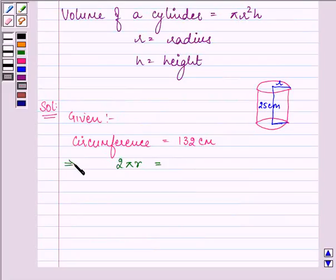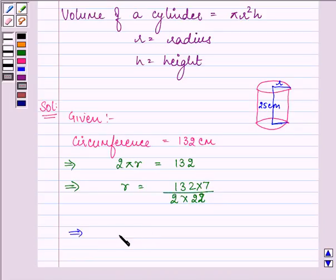That means 2πr equals 132 cm. That implies r equals 132 divided by 2 times the value of π, which is known to us as 22/7. So 7 will go in the numerator. That implies the value of r is, let us simplify it further.